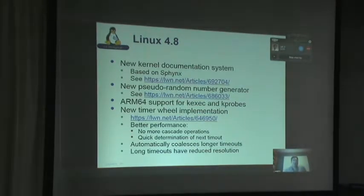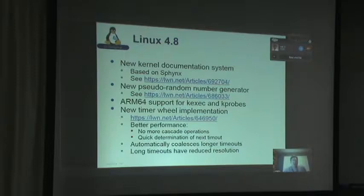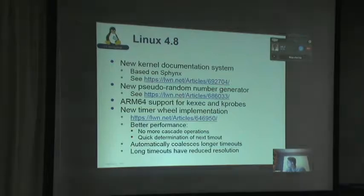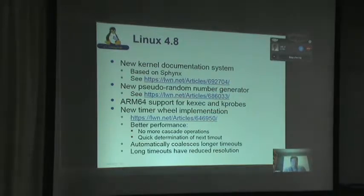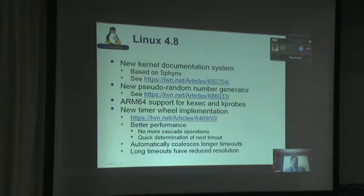In Linux 4.8, there's a new kernel documentation system. It's based on Sphinx, which uses reStructuredText — a different markdown language similar to Wiki or Markdown. It's intended to be produced as ASCII text and then translated into multiple output formats on the back end, so you can produce HTML documentation, PDFs, or other formats. This is pretty useful; there have been complaints about the old DocBook and LaTeX system for quite a long time.